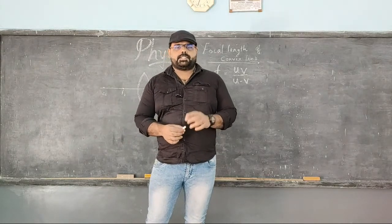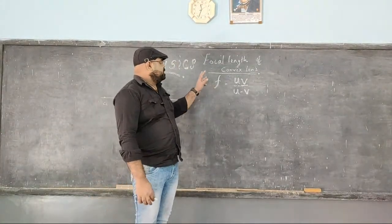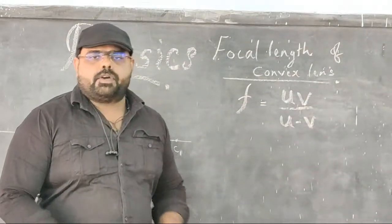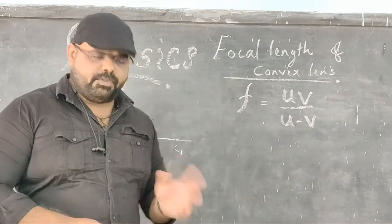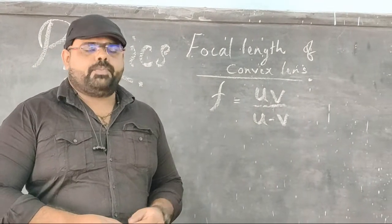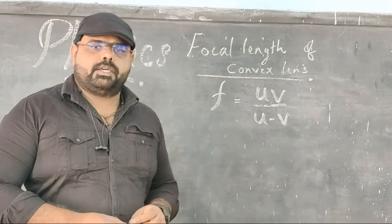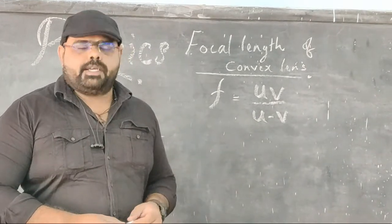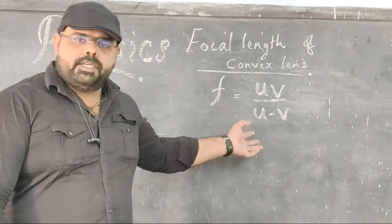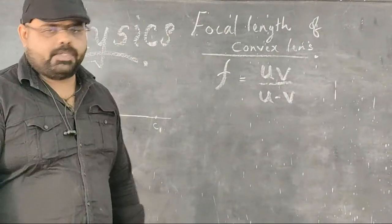Let us start with the first experiment for today. The first experiment we are going to demonstrate is regarding the focal length of the convex lens. We have already studied in the theory part regarding spherical lenses, and we have discussed how the focal length of lenses can be determined. We have the lens formula which is used in numerical problems to find the focal length of the convex lens.